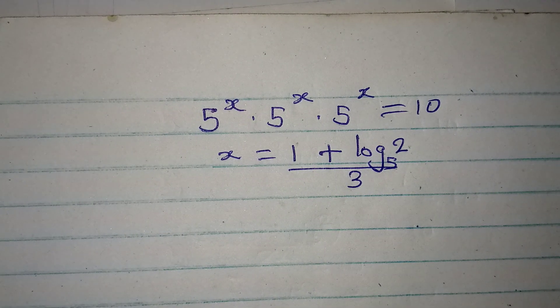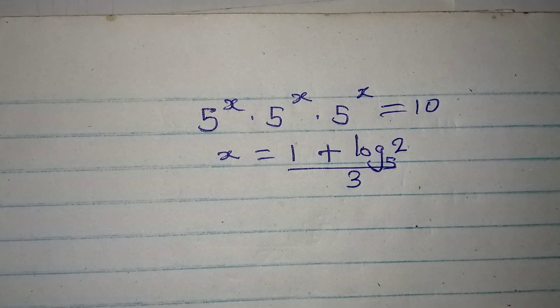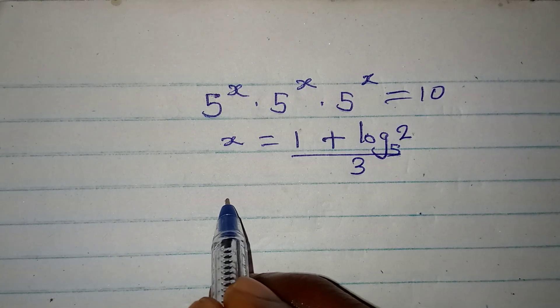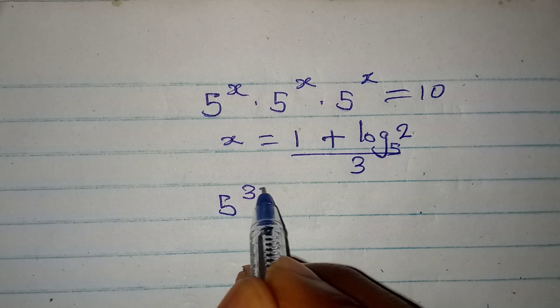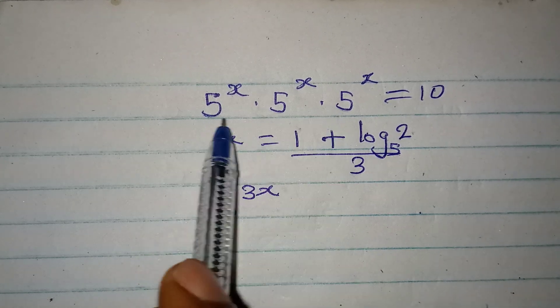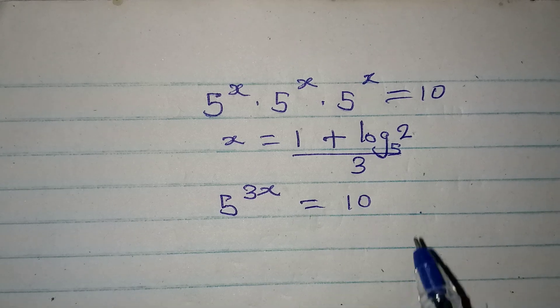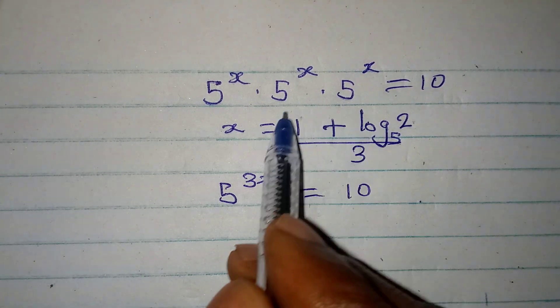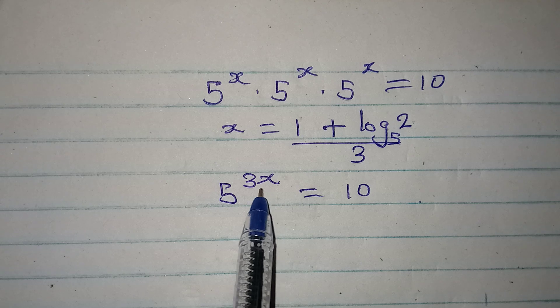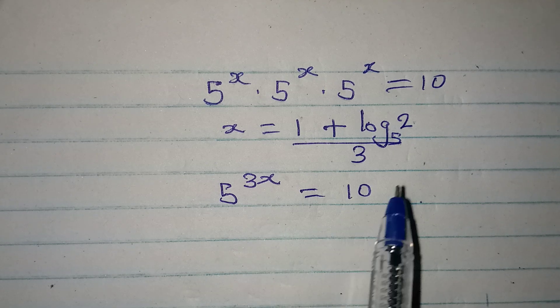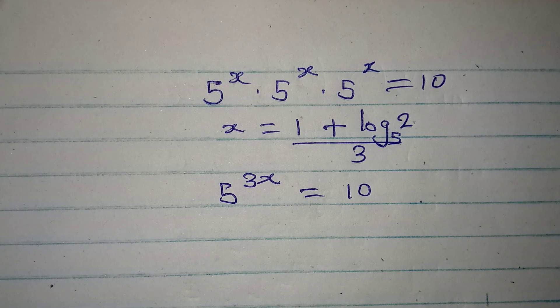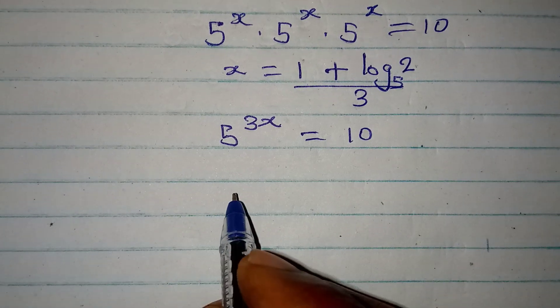Now, we are going to put this into this equation. But before then, let's deal with the left-hand side. We got 5 to the power of 3x, since we have to pick one of the bases and add the power. And this is equal to 10. So, if we put this value into this, do we have 10 as our answer? That is what we are trying to work on now. So, from here,